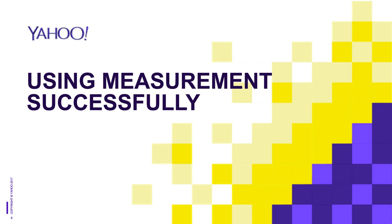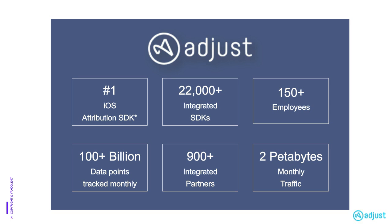A little on Adjust: we were founded in 2012 by Christian Henschel, Paul Mueller, and Manuel Neat. What began as a small mobile attribution company with these three employees based in Berlin has now grown to 14 offices with around 150 employees globally. Recently launching full support for our domestic Chinese market, we now have around 22,000 integrated SDKs worldwide.